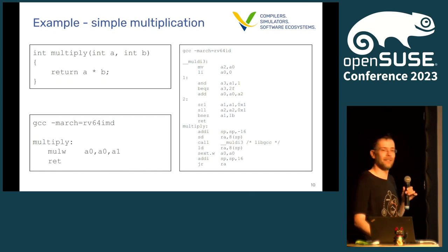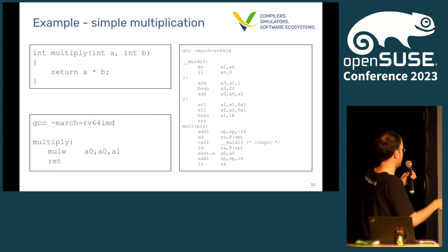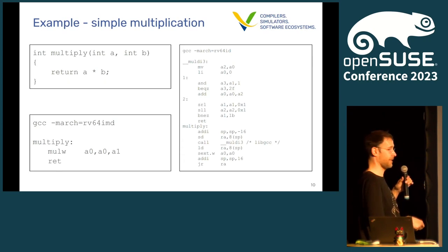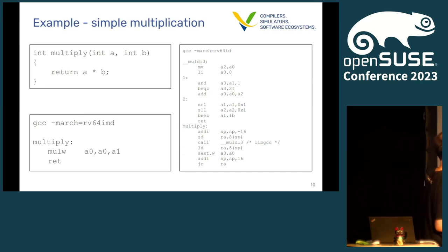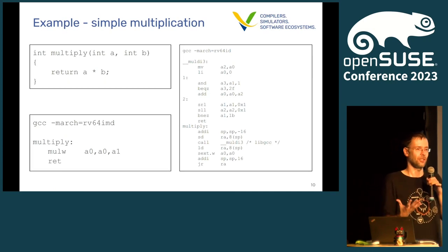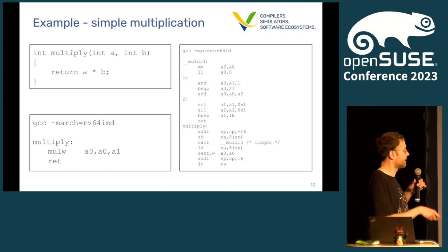When you have a function that returns A times B, with the multiplication extension available it's just the MUL W instruction that executes this and returns the value in A0. When you don't have the multiplication extension, you end up with a big chunk of code which does the same but only using integer instructions. So when your software ecosystem does not require the M extension, you would end up with that code with really bad performance.